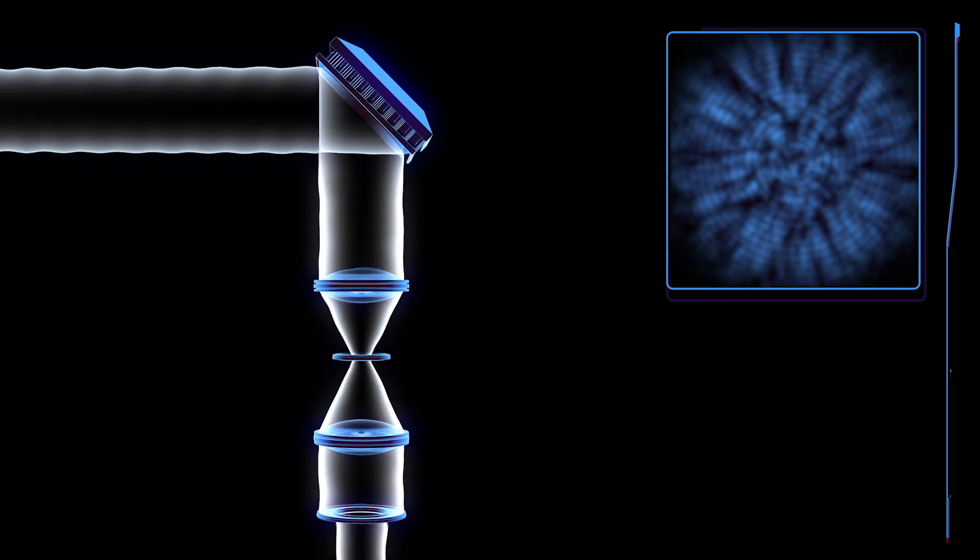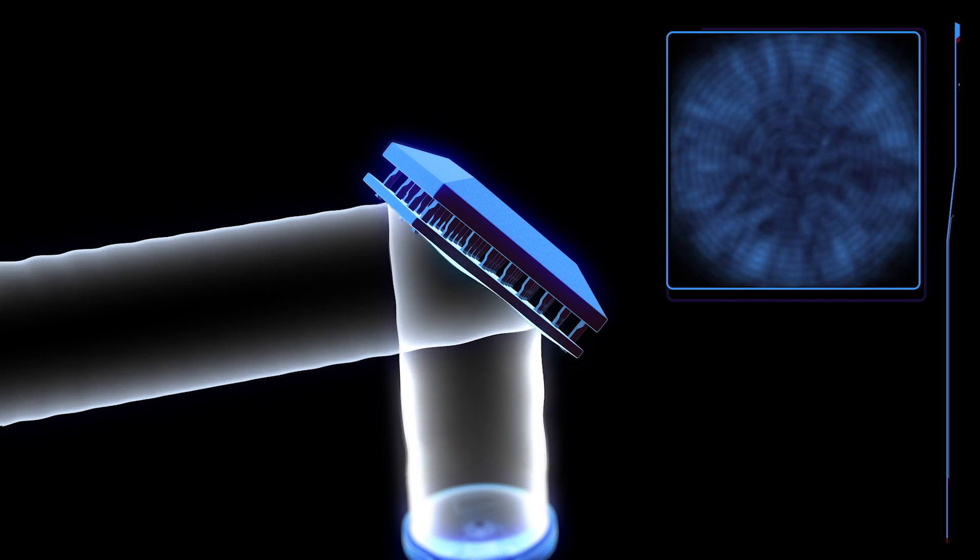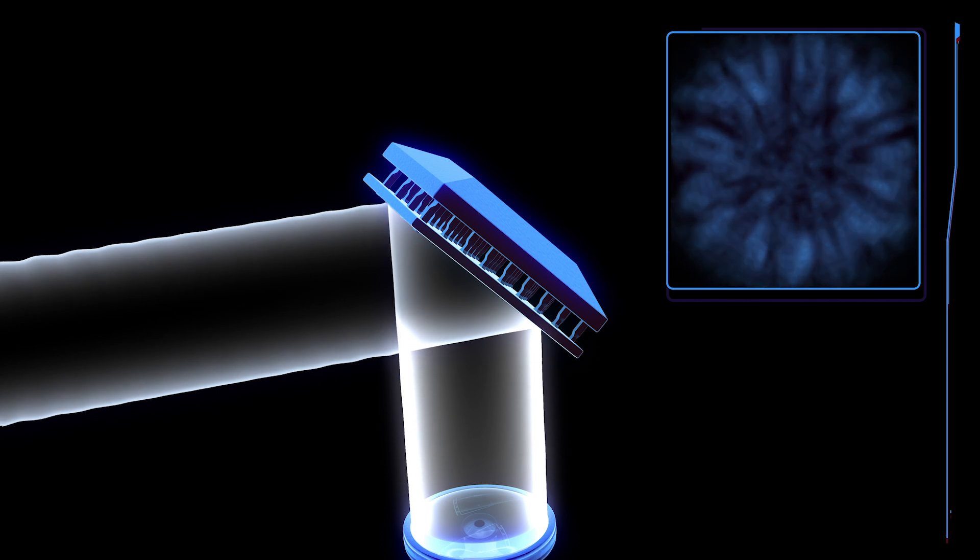Collecting more light increases the image signal, but the planets are still hidden under blobs of leftover, distorted starlight. To remove these blobs, the coronagraph has special deformable mirrors that can change shape by using hundreds of tiny pistons. This corrects the distortions in the light beam.